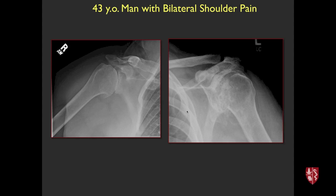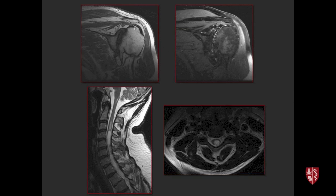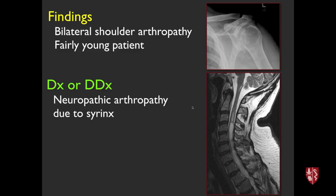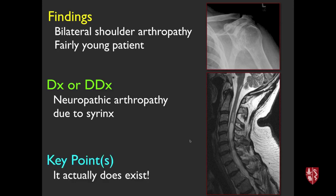43-year-old man with bilateral shoulder pain. MRI shows bilateral shoulder arthropathy in this fairly young patient, plus a large syrinx on cervical spine MRI. This is a case of neuropathic arthropathy presumably due to a syrinx in the cervical spine. This is something we talk about in radiology that actually does occur — possibly the one case you'll ever see.